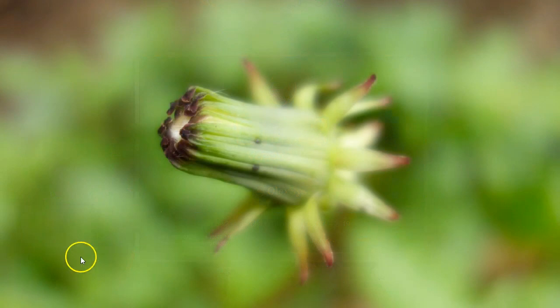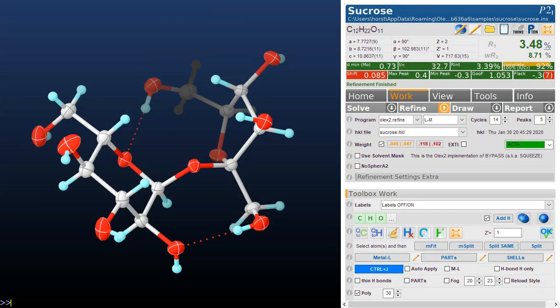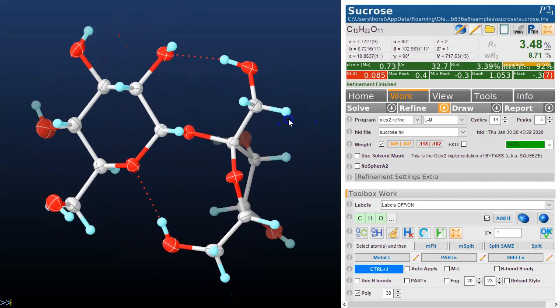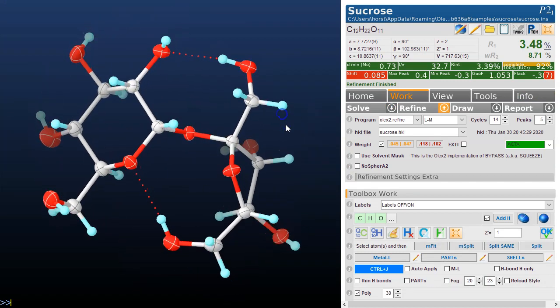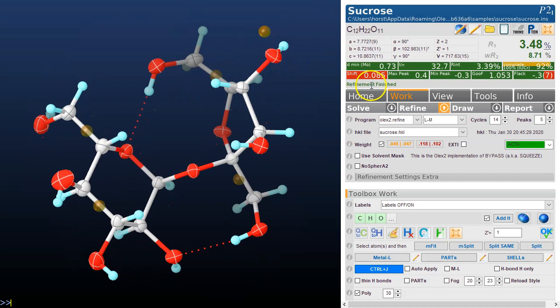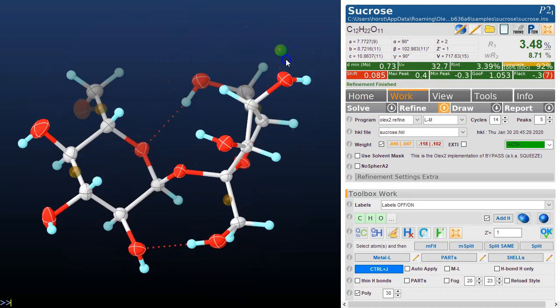Today we will look at residual electron density. If we look at the structure of sucrose, it's looking all very well until we switch the Q peaks on and we see there's a few Q peaks here, namely this one. If I click on this, this is Q1, the biggest peak.